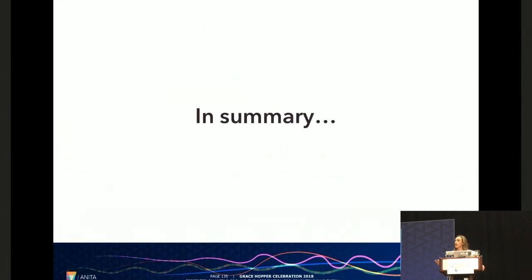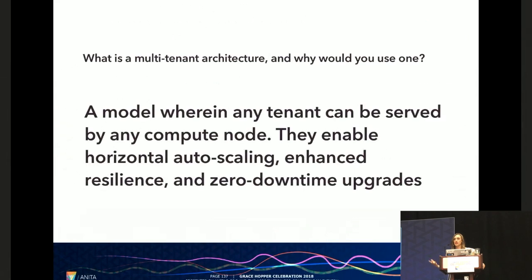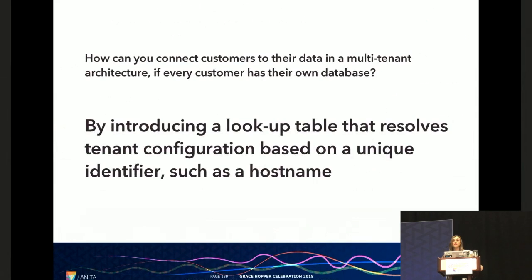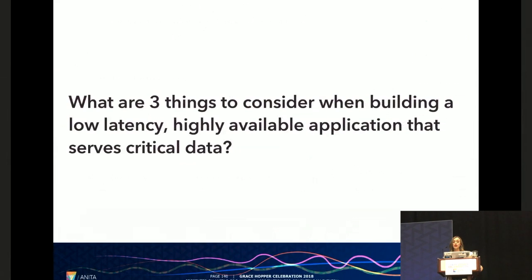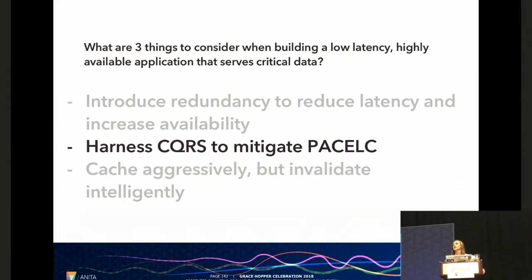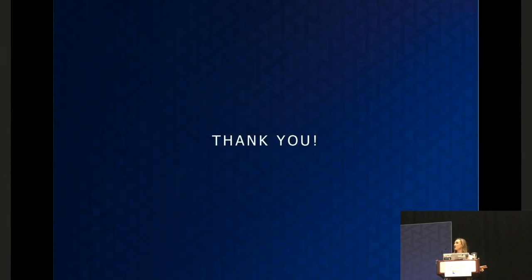All right, so at the beginning of the presentation, I said I'd like for you to be able to answer three questions. What is a multi-tenant architecture and why would you use one? Well, it's just a model where any tenant can be served by any compute node. And you'd use them because they enable awesome things such as horizontal auto-scaling so that you can scale by load, enhanced resilience, and zero downtime upgrades. How can you connect your customers to their data within a multi-tenant architecture if every customer has their own database? Well, in our case, we just introduced a lookup table that was able to resolve tenant configuration on every request based on a unique identifier such as a host name. And finally, what are three things to consider when building a low latency, highly available application that serves critical data? Well, you can introduce redundancy to reduce latency and increase availability. You can harness CQRS to mitigate PAC-ELC. And you can cache aggressively as long as you invalidate intelligently. Great, thank you so much for listening.